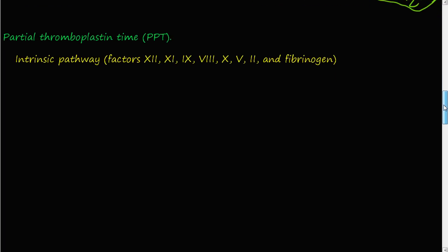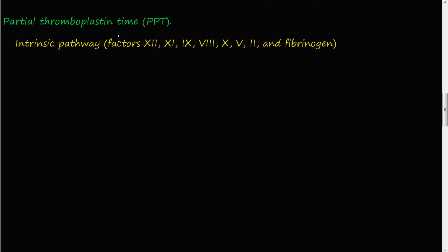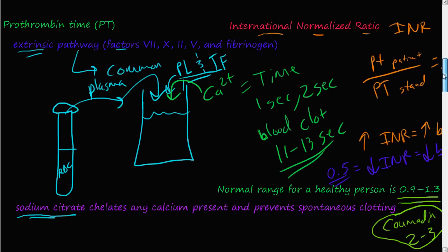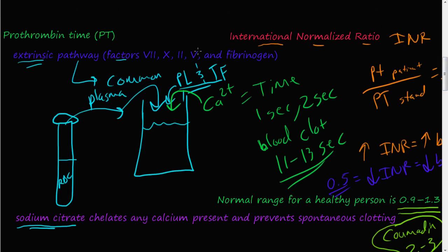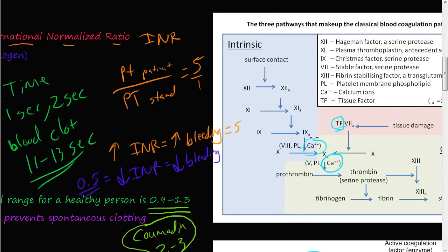Now let's talk about the partial thromboplastin time, or PTT. This one measures the intrinsic pathway — factors 12, 11, 9, 8, 10, 5, 2, and fibrinogen. Many of these factors overlap with the PT test because both tests measure the common pathway.